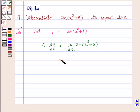Now, the derivative of sin(x) is cos(x). So dy/dx of sin(x² + 5) is cos(x² + 5) times d/dx of x² + 5.